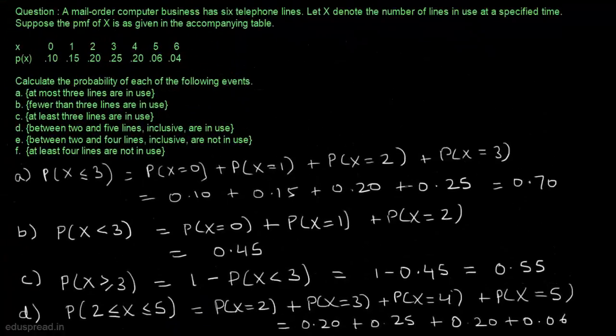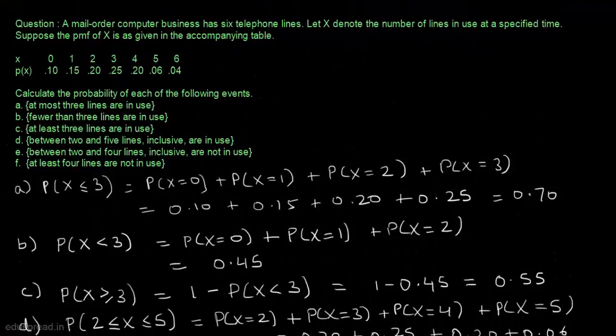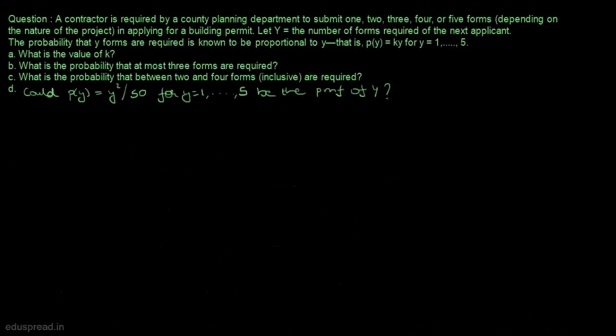We are done with all the parts of question 1. Now let's move to question 2. A contractor is required by a county planning department to submit 1, 2, 3, 4, or 5 forms in applying for a building permit. Let y equal the number of forms required of the next applicant. The probability that y forms are required is known to be proportional to y, that is P(y) = ky for y = 1, 2, 3, 4, 5.